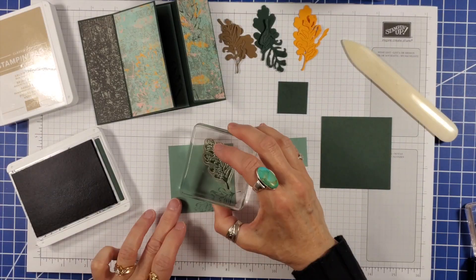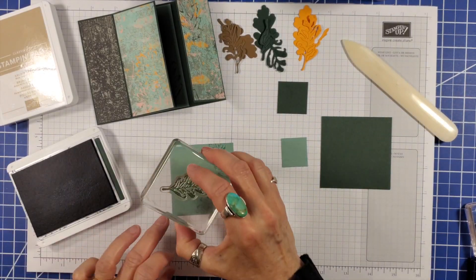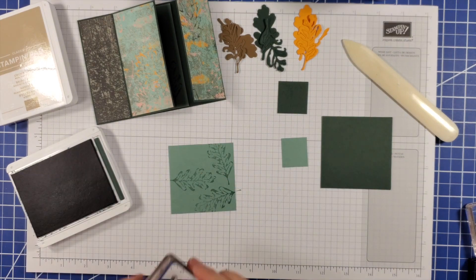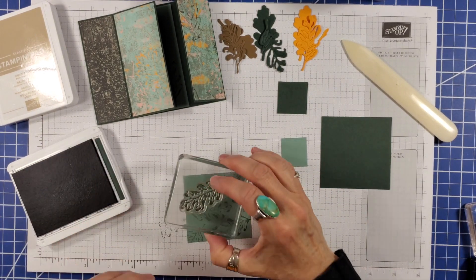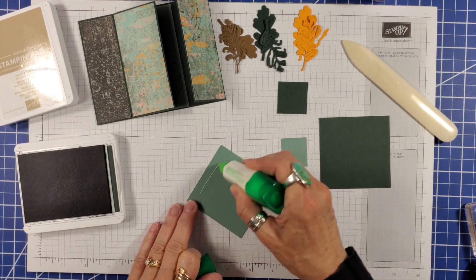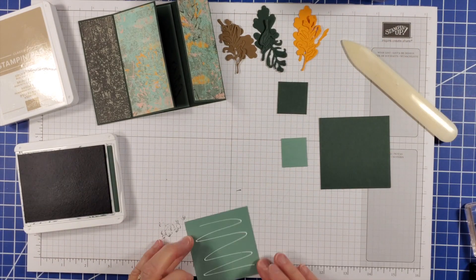It's time to decorate the front. I stamped the leaf in evening evergreen on a square piece of soft succulent card and adhered it to a square of evening evergreen card.